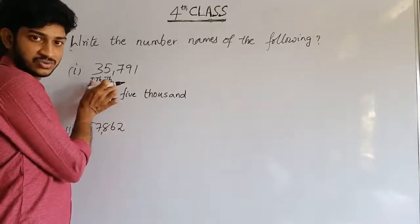So, thirty-five thousand means you have up to ten-thousands place given. How many thousands here? Thirty-five thousands. These two places are thousands — the ten-thousands and the thousands. So total thousands here are thirty-five thousand. Thousands are completed.